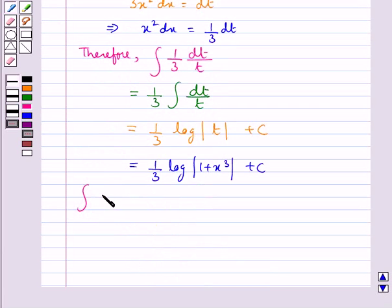Thus we have integral x squared dx over 1 plus x cubed equal to 1 upon 3 log modulus 1 plus x cubed plus c, where c is the constant of integration.